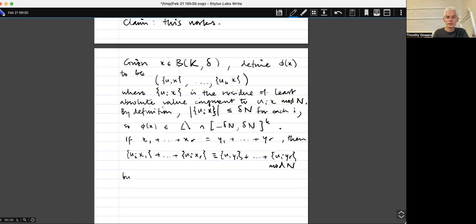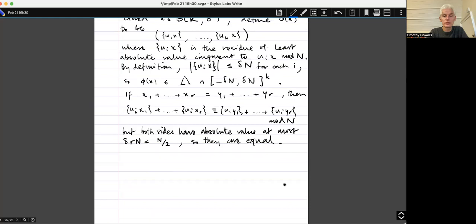But both sides have absolute value at most Delta R, which is less than Delta R R N, which is less than N, which is less than n over 2. So they are congruent mod N, they have absolute value less than n over 2, so they are equal. So that gives you that phi is a homomorphism of order r.